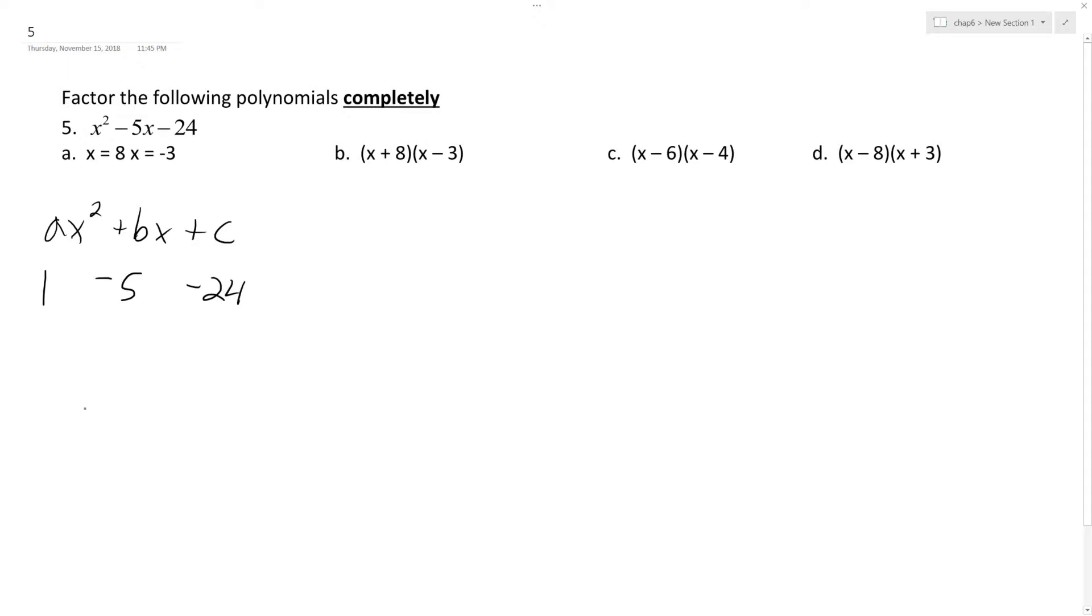We've got opposite of B. It's 5 plus or minus square root of B squared, 25, minus 4AC. That ends up being 4 times 20, so plus 96.